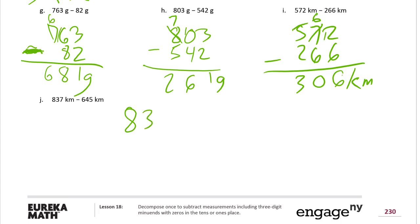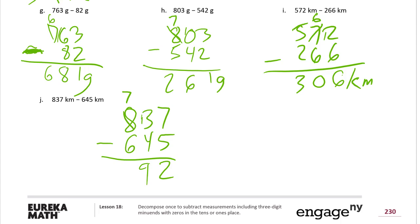Eight hundred thirty-seven minus six hundred forty-five. We have enough ones — seven, we can take away five and have two left. But three tens minus four tens: we don't have enough tens, so we break up one of these hundreds. We'll have seven hundreds left, and that gives us ten more tens. Ten plus the three we already have is thirteen tens. Thirteen minus four is nine. Seven hundreds minus six hundreds is one hundred. So it's 192 kilometers.